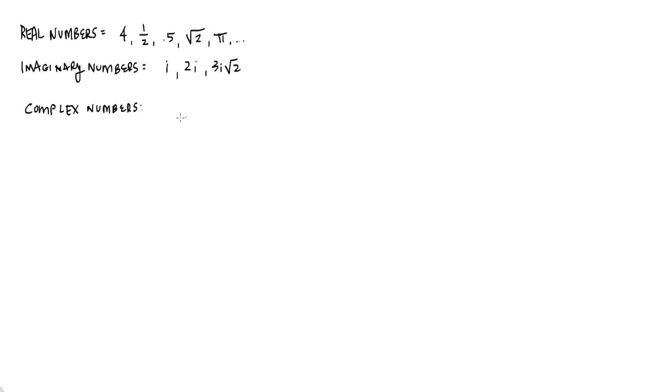So for example, for an example of a complex number, say 2 plus 3i. That's a combination of a real number and an imaginary number.